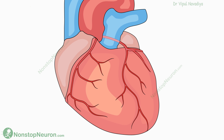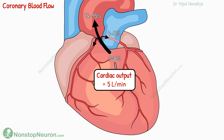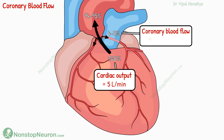Now let's see the physiological concepts related to coronary circulation. First, coronary blood flow. Under normal conditions, the heart receives about 4 to 5% of total cardiac output. Normal cardiac output is about 5 liters per minute, so 4 to 5% of that is about 225 ml per minute. Thus coronary blood flow is about 225 ml per minute. Note that the heart represents only 0.5% of the total body weight, so in terms of tissue mass, the coronary blood flow is very high compared to that in other tissues.